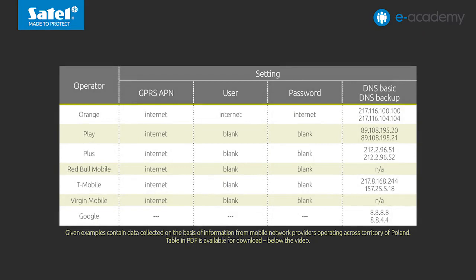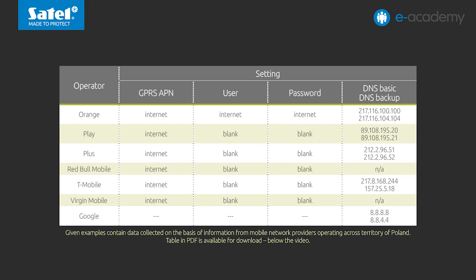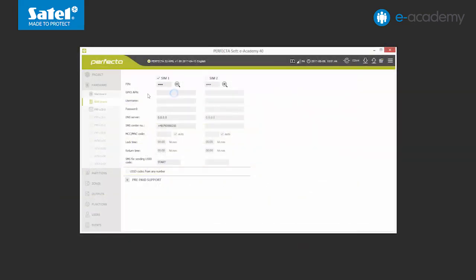We have prepared a table that contains a set of data for several operators in Poland. If you do not know the address of your operator's DNS server, you can use the addresses provided by Google. The table in PDF format will be available for download under the video. In the settings of the GSM phone, enter the configuration data of your SIM card operator, and use the Google DNS address.